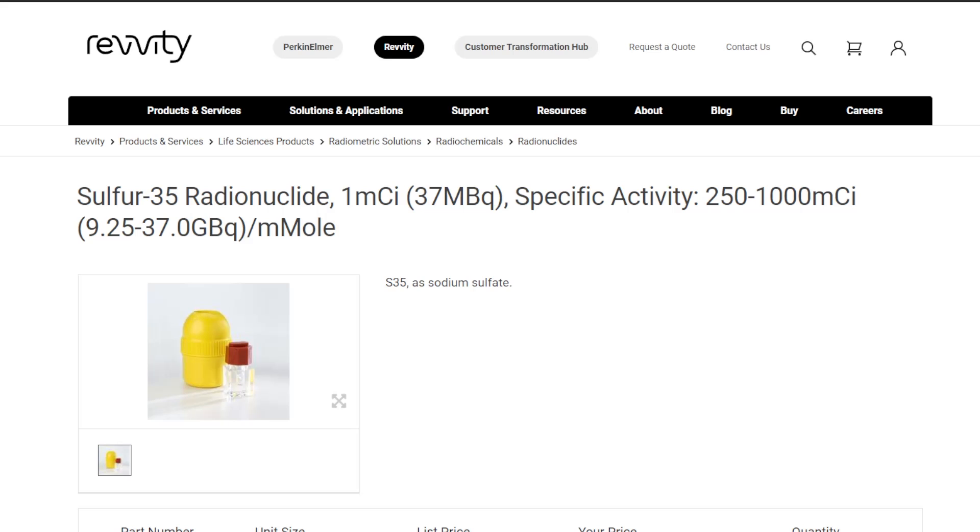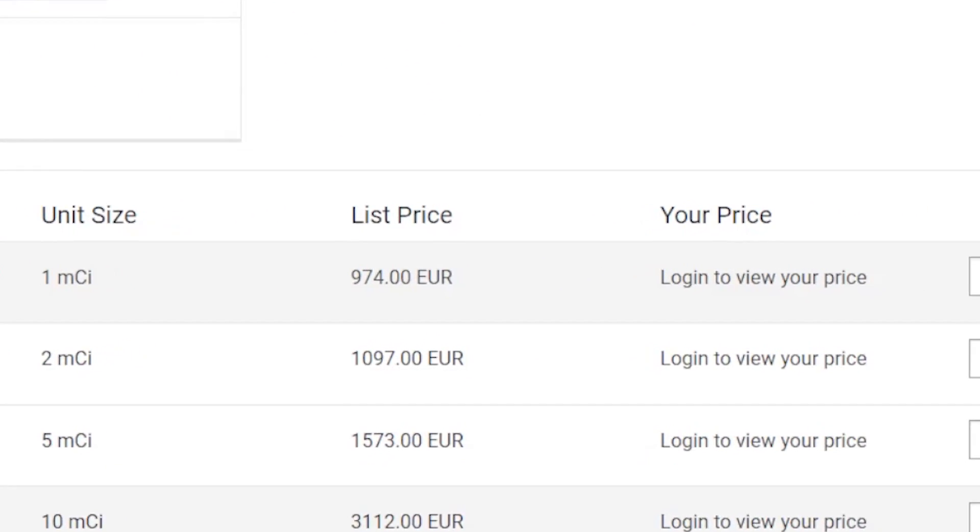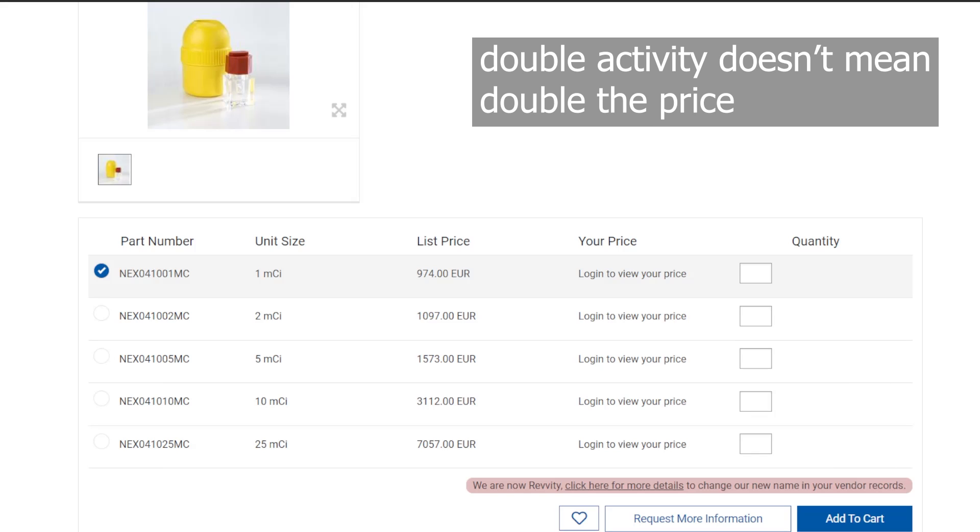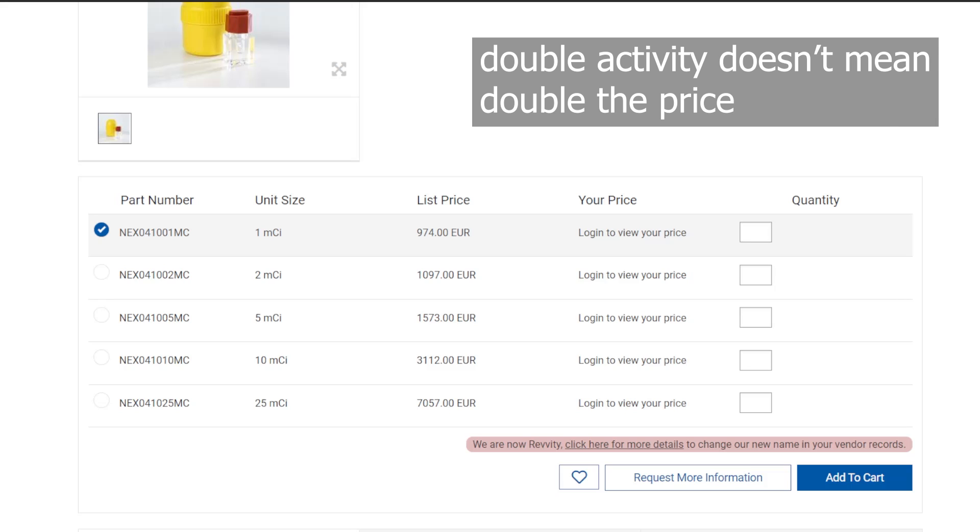You need a Sulfur-35 sodium sulfate solution with an activity of 37 MBq. And a quick check on the internet shows that the price is not directly dependent on the activity. It's not like double the activity equals double the price.